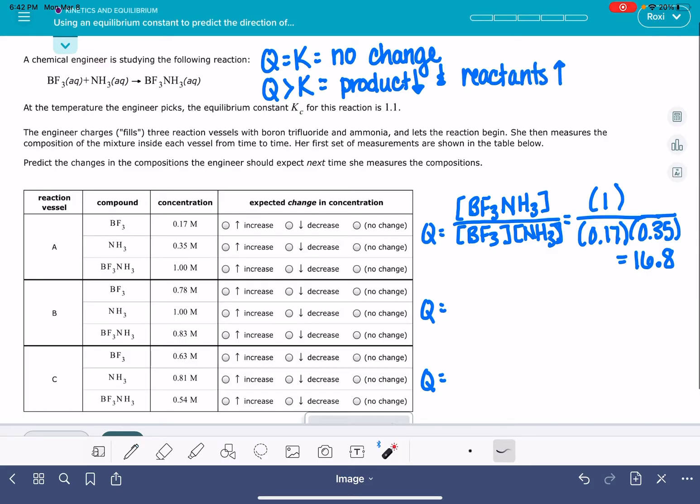Our Q is too large. That means we have too much stuff on the right-hand side. We need to shift this reaction to the left. We need to decrease the amount of product, and we need to increase the amount of reactants. And then if we have the opposite situation where Q is too low, that means that we need to increase the amount of our products, and we need to decrease the amounts of our reactants.